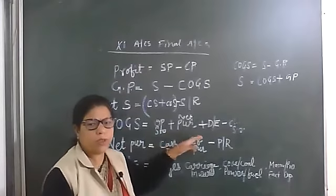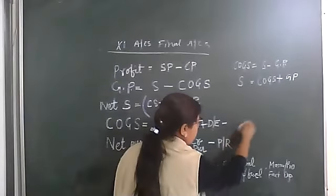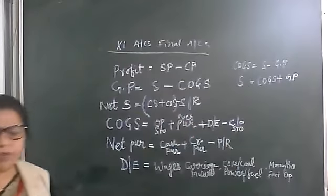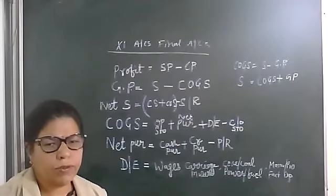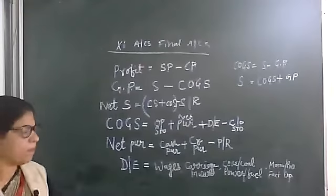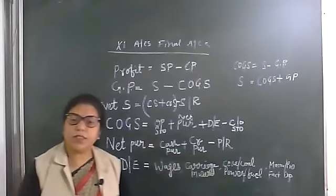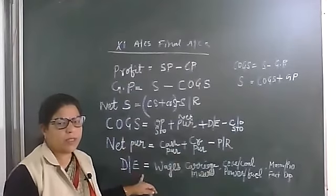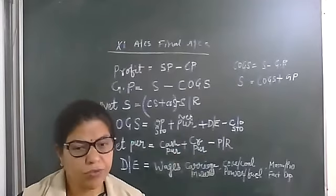Cost of goods sold formula: opening stock plus net purchases plus direct expenses minus closing stock. Note that in place of the word 'stock,' a few books use the word 'inventory' — inventory means the goods lying in stock. Net purchase equals cash purchase plus credit purchase minus purchase return. Direct expenses are those expenses incurred in the factory manufacturing process.